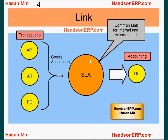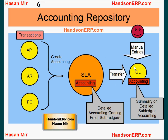In Release 12, the subledger accounting module serves as a common link between the transactions in subledgers and balances in the general ledger module, and you can use it for reporting for internal and external audit purposes. The general ledger module is the accounting hub — all accounting created from any module in E-Business Suite has to reach GL because financial reports are run through general ledger and accounting has to be picked up by the financial report.